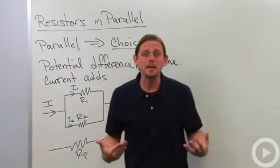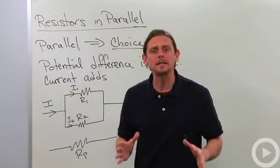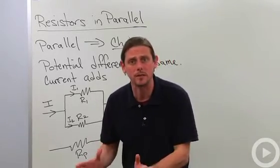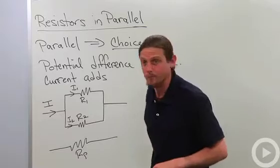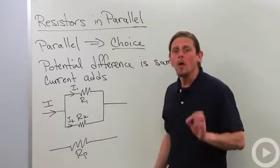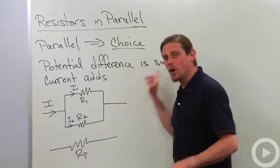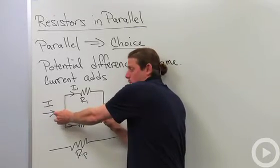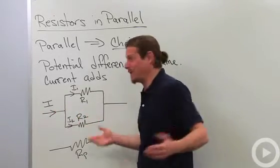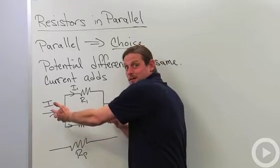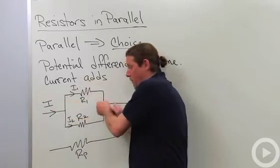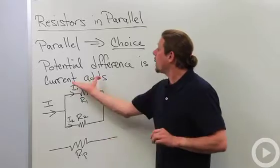All right, so basically parallel networks consist of two separate circuits that are independent of one another. In parallel, potential difference is the same, so the potential difference between these two points is the same because they're the same two points. There were just two different branches that went through.